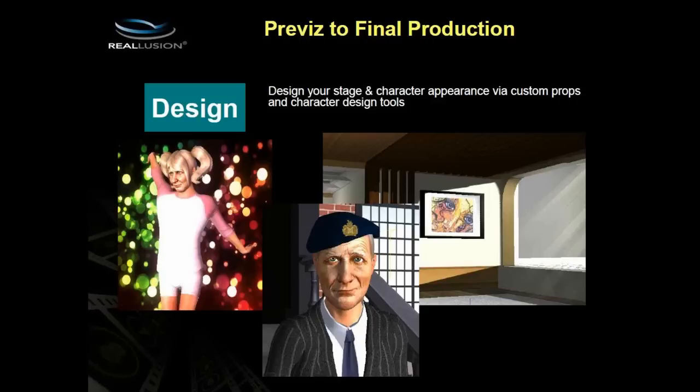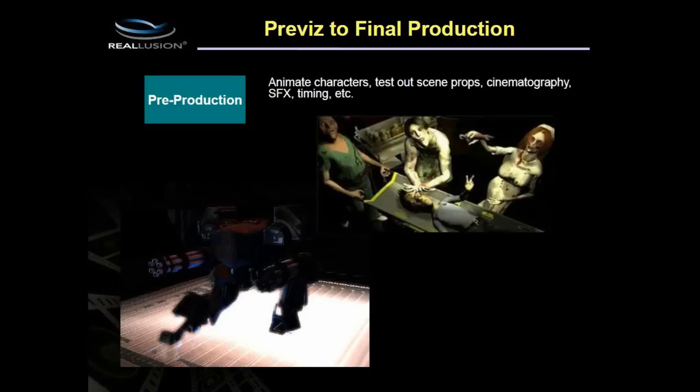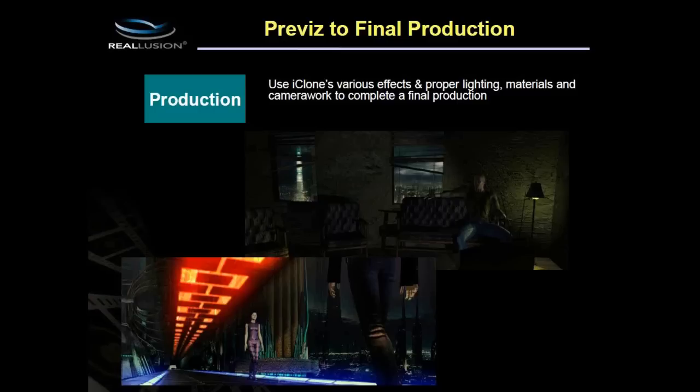In the pre-production stage you're testing out scene props, working on cinematography — camera work and character placement — which is the super important aspect of filmmaking that iClone helps work out. Sound effects and timing are also part of this stage. Then in production, the scenes shown here were both created in iClone with proper lighting, adjusted materials, and nice camera work.